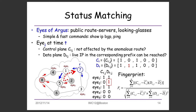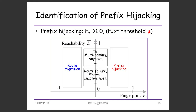We look at the difference to construct a fingerprint. In this case, looking glass 2 is affected by the anomalous route but is still able to reach the destination. Combining all the looking glasses — whether they're affected and able or unable to reach the destination in the data plane — we can categorize the event into one of the four categories mentioned before.